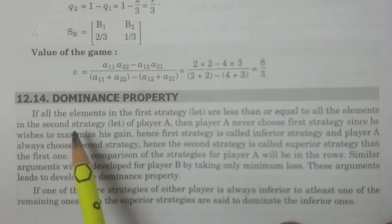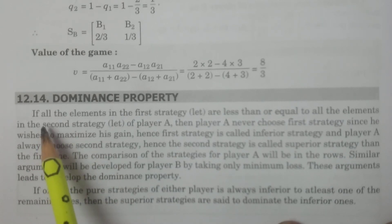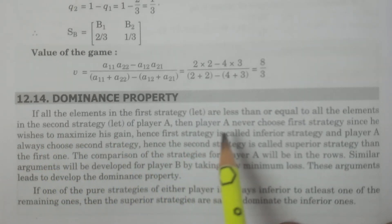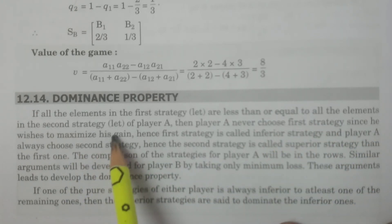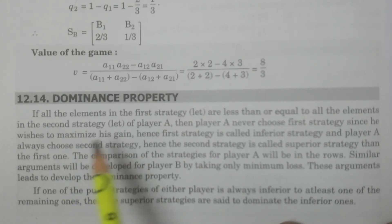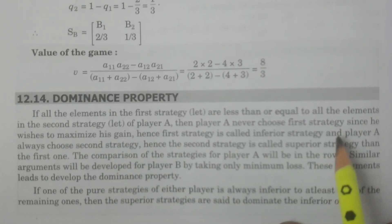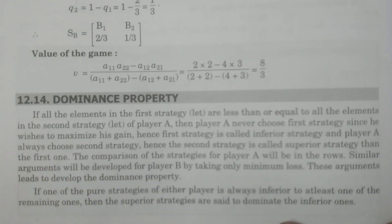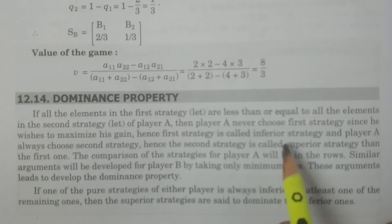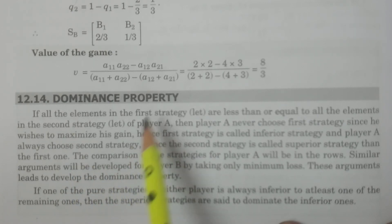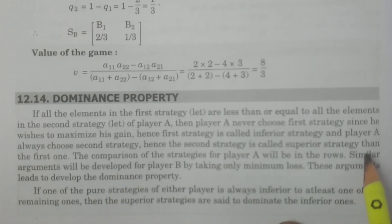Now, if all the elements in the first strategy are less than or equal to all the elements in the second strategy of player A, then player A never chooses the first strategy since he wishes to maximize his gain. Hence, the first strategy is called the inferior strategy of player A, and player A always chooses the second strategy — never the first, because it has minimum gain. Hence, the second strategy is called the superior strategy.